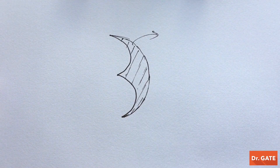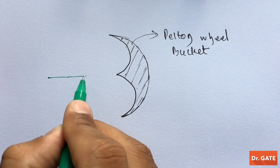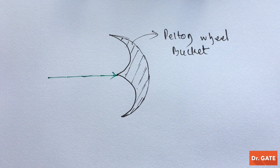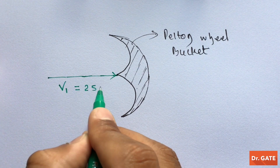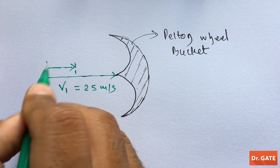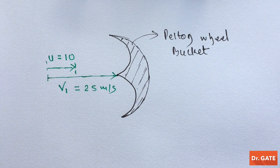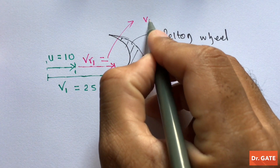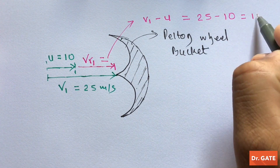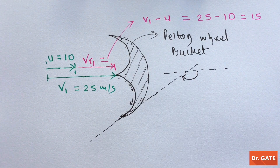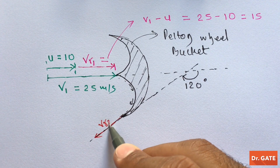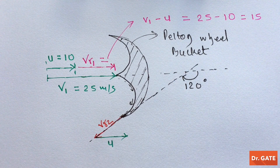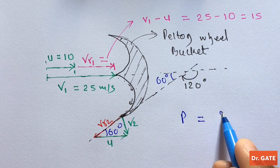This is a typical sectional view of the Pelton Wheel bucket. The water from the nozzle strikes the Pelton Wheel and it is represented by V1 which is 25 meter per second. This is the bucket's peripheral speed which is 10 meter per second. The relative velocity at inlet is mathematically V1 minus U, and its value is 15 meter per second. The deflection angle is 120 degrees, so the relative velocity at the exit to the bucket will be in this direction. If we draw the bucket's peripheral speed, then this would be the absolute velocity at exit, and we have to find the power developed by the Pelton Wheel.